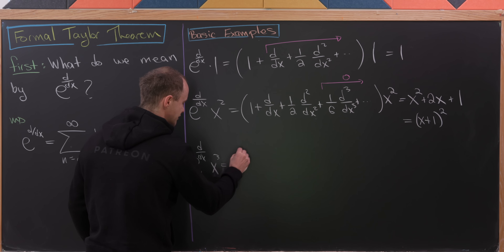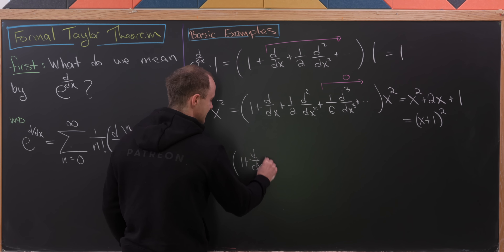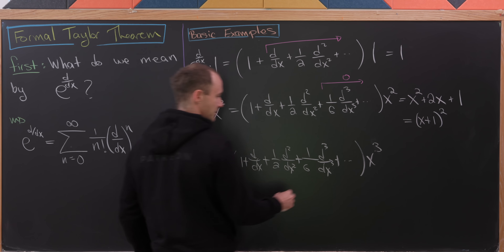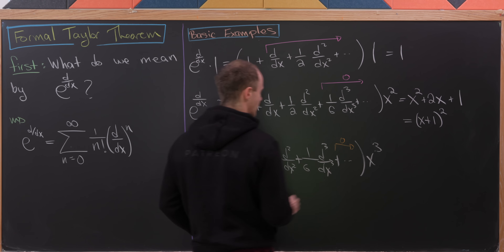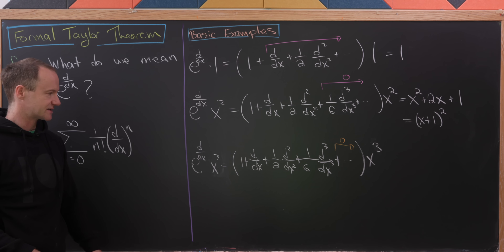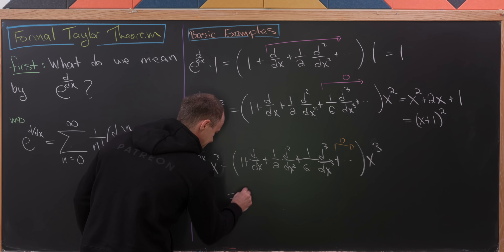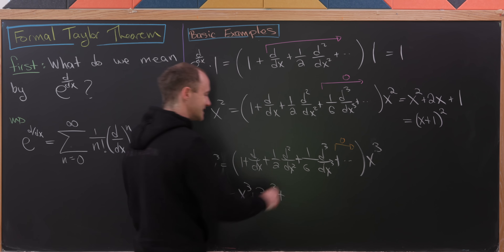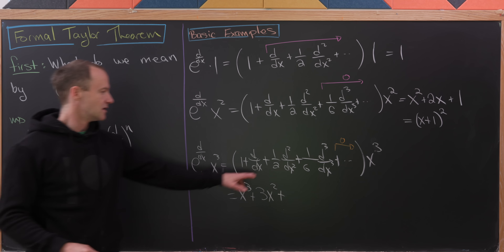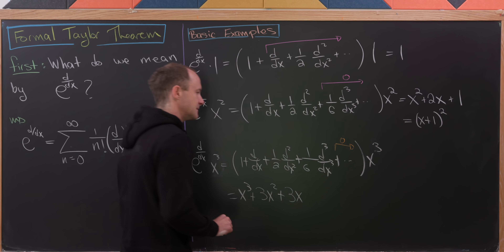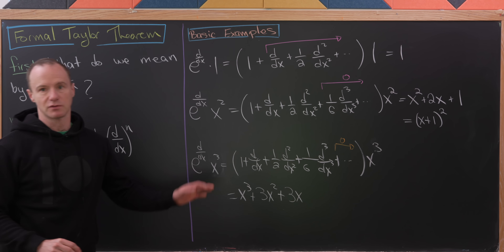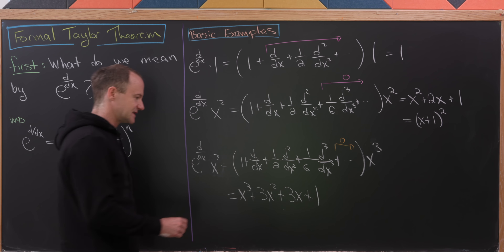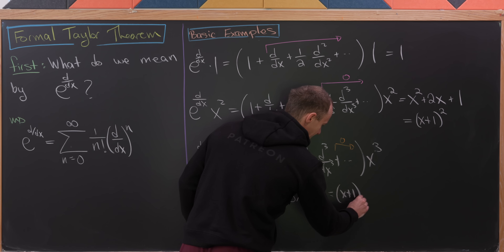Let's look at one more evaluation at a power function, applied to x cubed. Everything past the third derivative term evaluates to 0. So: 1 times x cubed is x cubed; the derivative of x cubed is 3x squared; the second derivative is 6x, multiplied by 1/2 gives 3x; the third derivative is 6, multiplied by 1/6 gives 1. That factors as exactly (1+x) cubed.